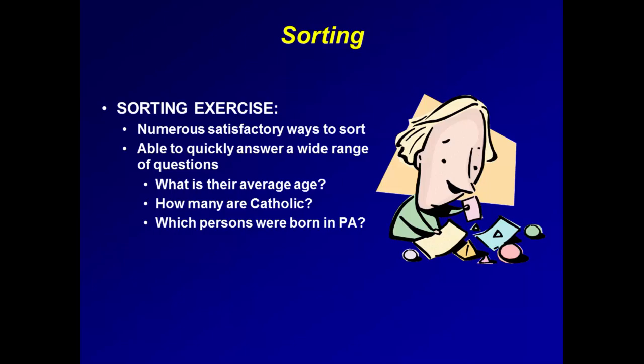By sorting it, we are in a position to answer any of a wide range of questions about these people. What is their average age? How many are Catholic? Which persons were born in Pennsylvania? The principle involved is the same one I use to assemble jigsaw pieces, putting pieces together in groups. What could be simpler? What could be more helpful in analyzing a problem?